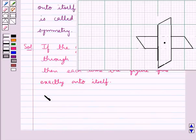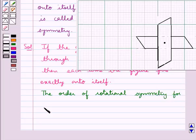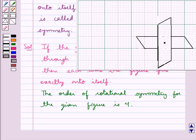So thus we can say that the order of rotational symmetry for the given figure is 4, since the figure fits onto itself 4 times in one complete rotation. So 4 is our final answer.